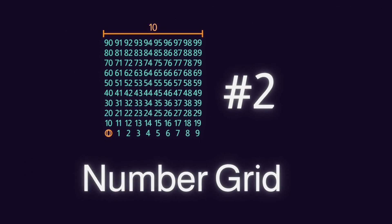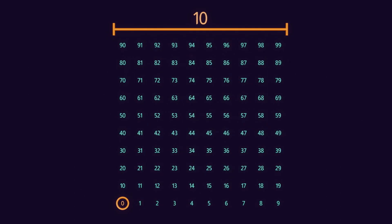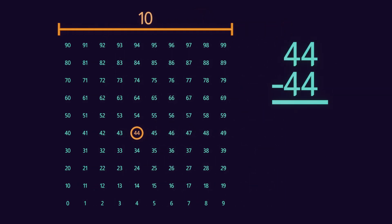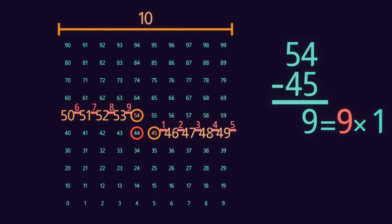The second proof uses a number grid of 100 digits from 0 to 99. Begin with a number that's a multiple of 11, like 44. Obviously 44 minus 44 is 0. If we then go up to 45, you can see all the numbers between the two rings — 54 and 45 — which is 9.